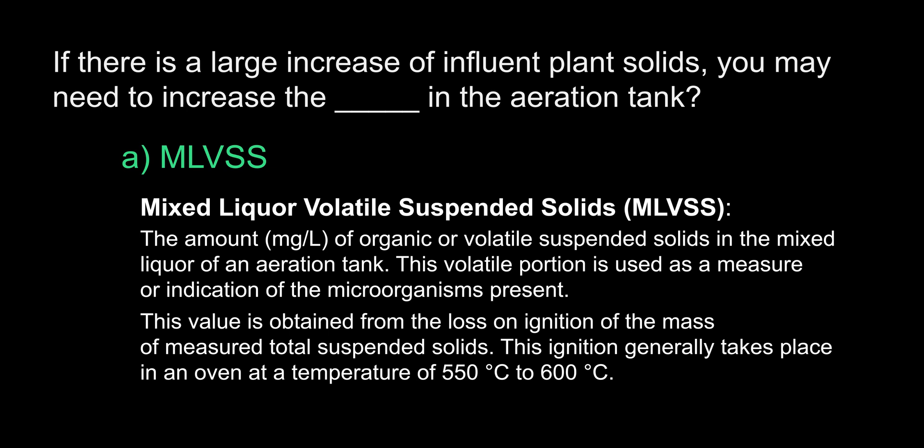Generally speaking, if a larger than normal amount of solids are arriving at your plant, there will be more food for the bugs. If there is going to be more food for the bugs, it is going to be important to keep the food-to-mass ratio balanced appropriately. More food means you're going to want more bugs in your system to eat it all up. This is most easily achieved by decreasing your wasting rates, which increases your mixed liquor suspended solids (MLSS), and when you increase your MLSS, you are also increasing your mixed liquor volatile suspended solids (MLVSS).